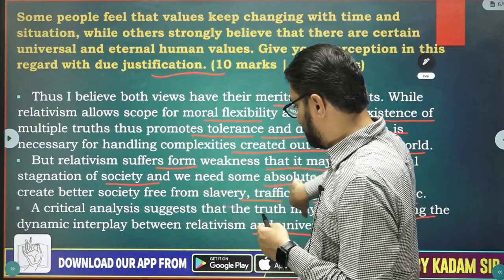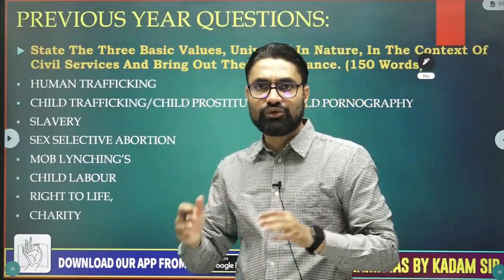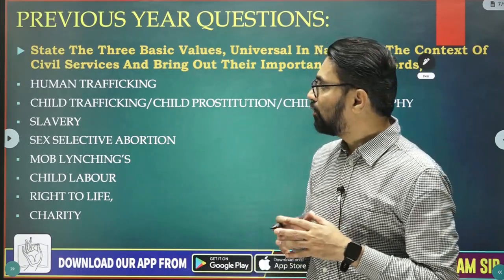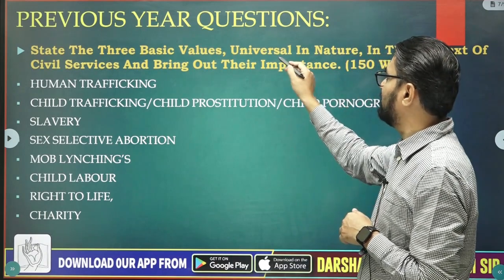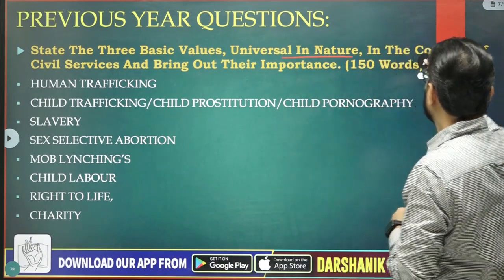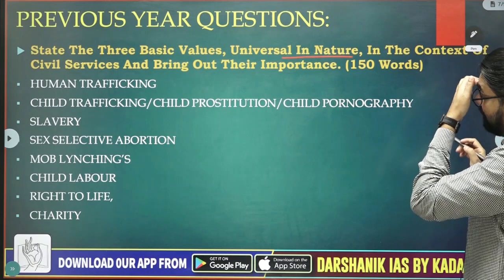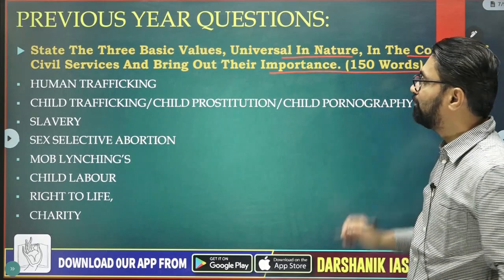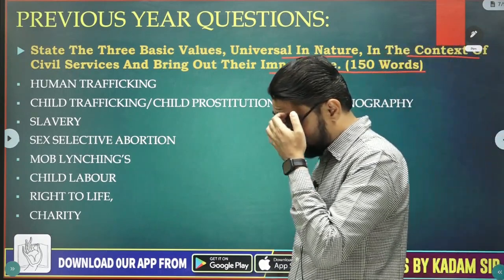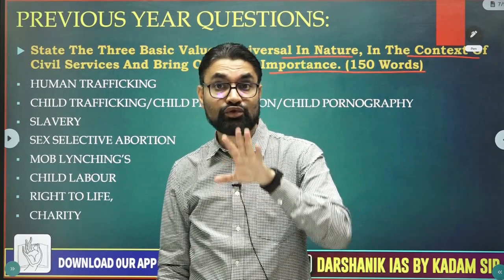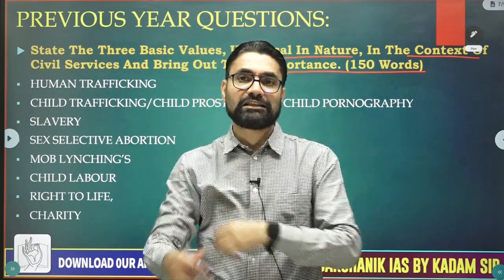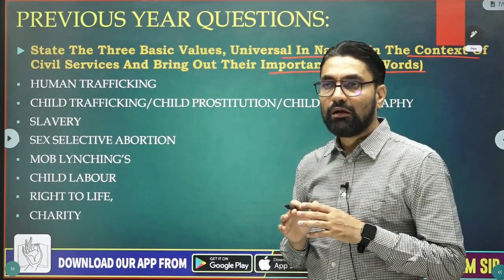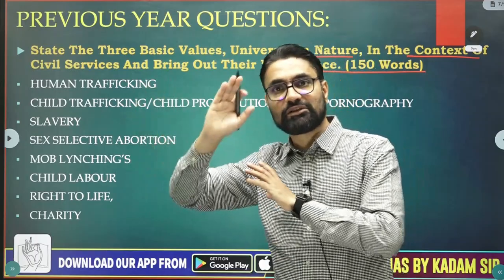Another UPSC question, slightly in an administrative context: 'State three basic values universal in nature in the context of civil services and bring out their importance.' When we discuss administrative ethics, I will give you more than 20–25 administrative values which are universal — values applicable to civil servants in any nation and context.